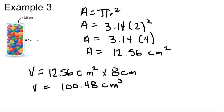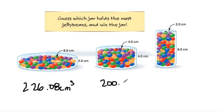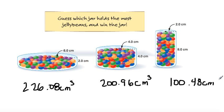In total: the first example is 226.08 centimeters cubed, the second example is 200.96 centimeters cubed, and the last example is 100.48 centimeters cubed. So the first one holds the most jelly beans because it has the largest volume. Copy all that down and you're good to go.